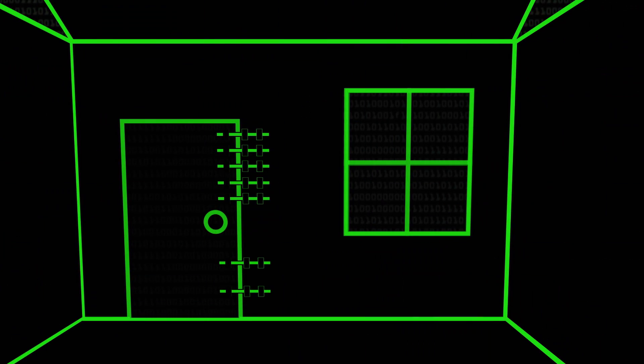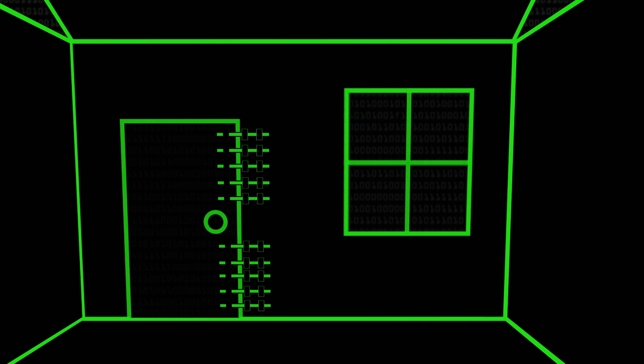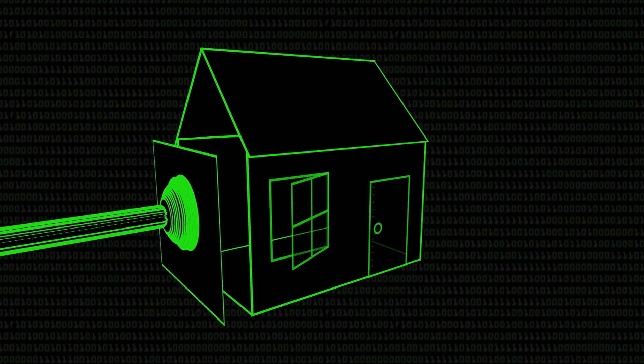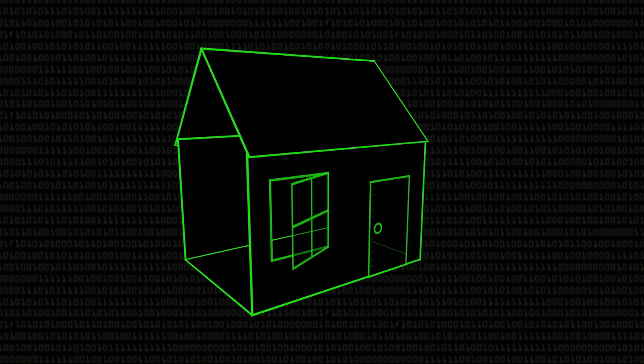You can do things where you weaken specific components used in systems built around these mathematical techniques. The mathematics, as far as we know, is okay, but there are so many other bits around it that you need. It's a bit like having 17 locks on your front door, but someone goes in through the window — or just pulls the wall down. You can find other ways in.